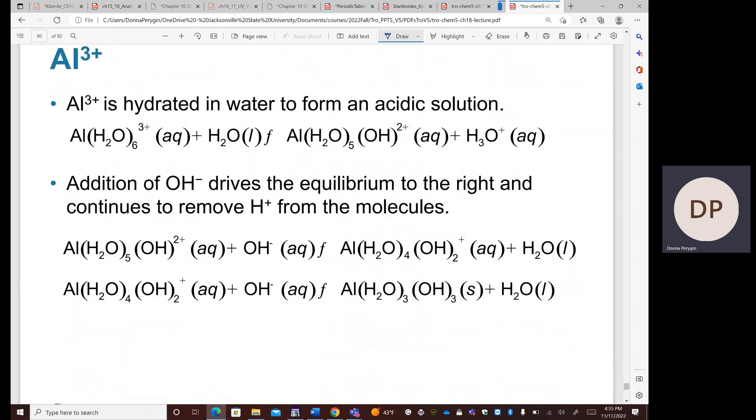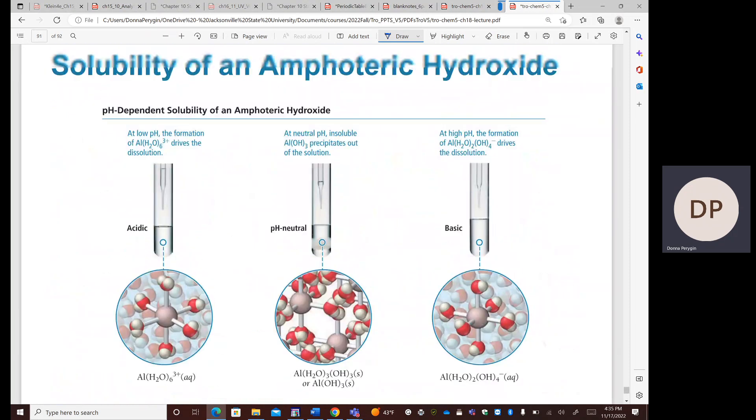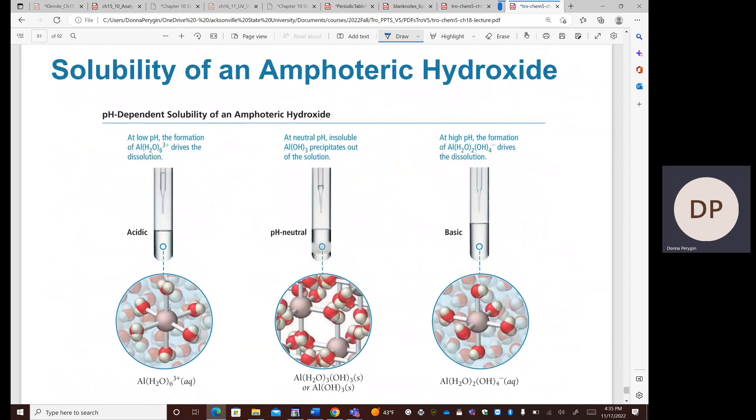In water, these metal hydroxides can actually form, if we have an acidic aqueous solution, then, for example, aluminum will form this complex where we have this hexahydrate. Because the complex forms, it's going to drive the dissolution of the aluminum in the solution there.